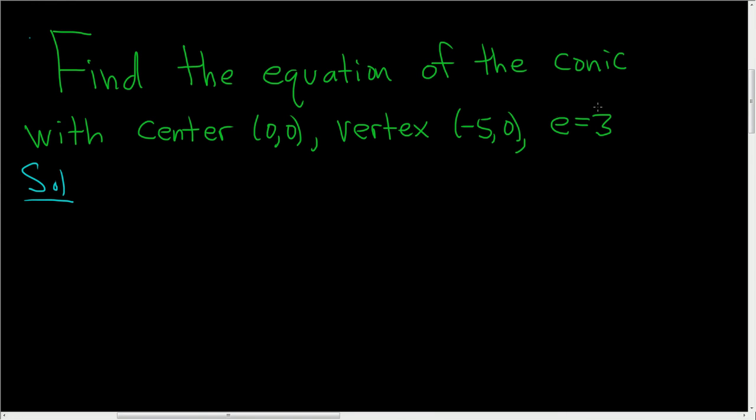We know that the eccentricity is equal to 3, and that's bigger than 1, so that means we have a hyperbola. Whenever the eccentricity is bigger than 1, we have a hyperbola.